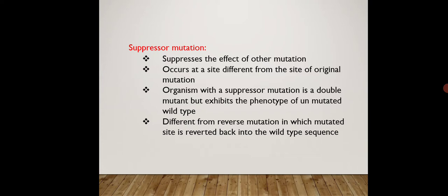An organism with the suppressor mutation is a double mutant, because there is suppression of the other mutation. The first mutation's effect may be visible, but the second mutation's effect will not be visible. This mutation suppresses the effect of the other mutation, and it is different from the reverse mutation.